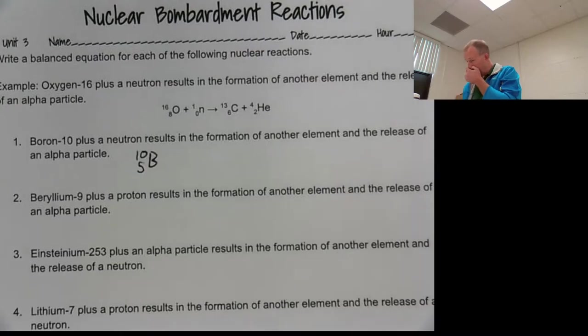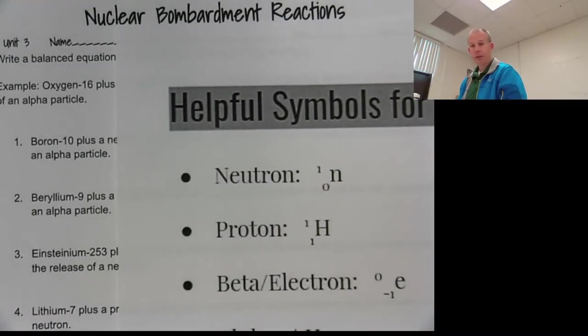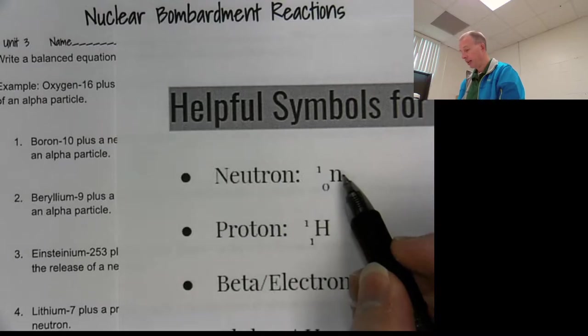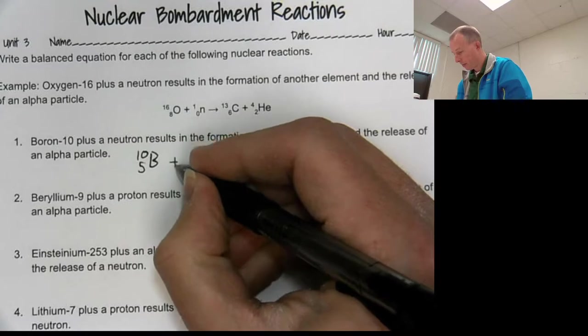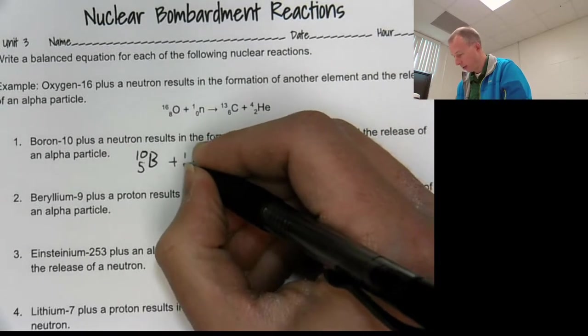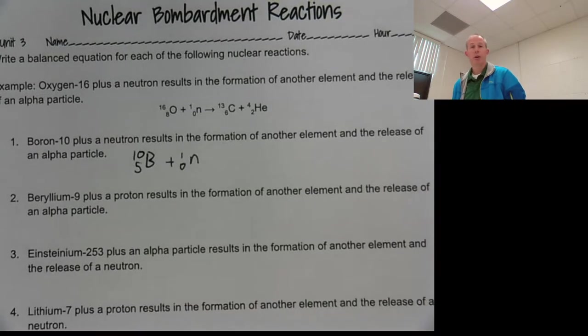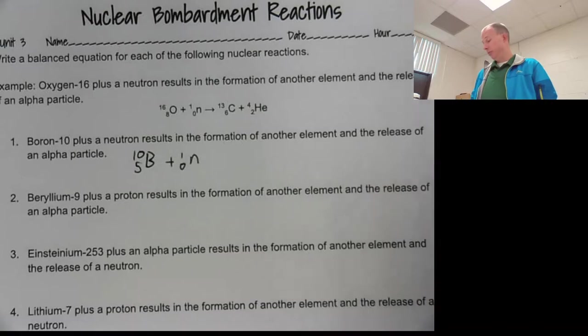It says boron-10 plus a neutron. So go and look at your little handy dandy chart here. See that a neutron looks like that. It's an N. It's got a one on top. It's got a zero on the bottom. You can do a capital or lowercase. I don't care. So it's got a one because it's a mass number of one. It is not a proton. So you just put a zero there.